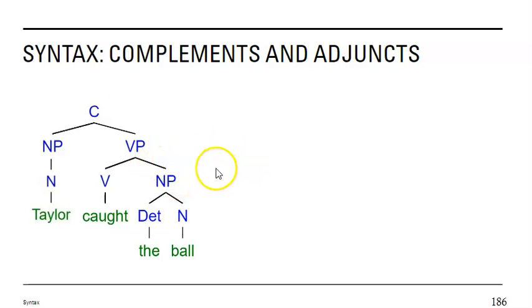In linguistics, we show the complement relationship by how the tree is put together. In this case we're going to focus on the verb phrase. When the noun phrase is required, we see that the noun phrase is connected with the head of the verb phrase, the verb.